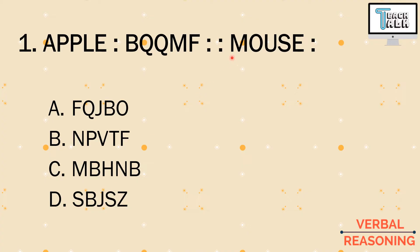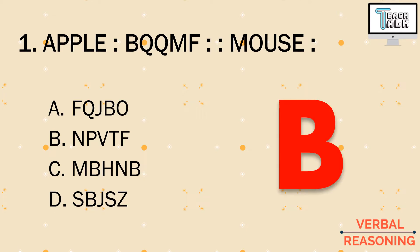Let's start with letter M. What comes after M? It's N. What comes after O? P. What comes after U? V. What comes after S? T. And what comes after E? It's F. So the pair of the word mouse is N-P-V-T-F, which is letter b) npvtf.